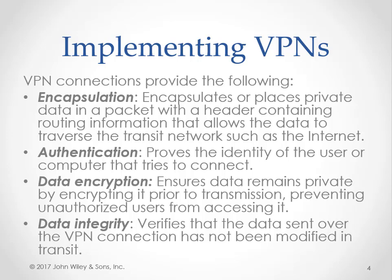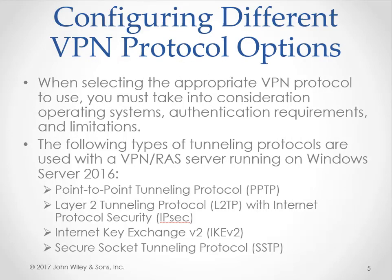Data encryption provides confidentiality, one of the other pillars of cybersecurity. VPN can basically be used in two different scenarios. First, a client connecting to a remote access server to access internal resources from off-site — remote access VPN or on-demand. The second scenario involves two remote sites connected to each other using a VPN tunnel between two servers or devices. Alternatively, two different organizations could create a VPN tunnel so users from one organization can privately access the resources of the other, and vice versa.